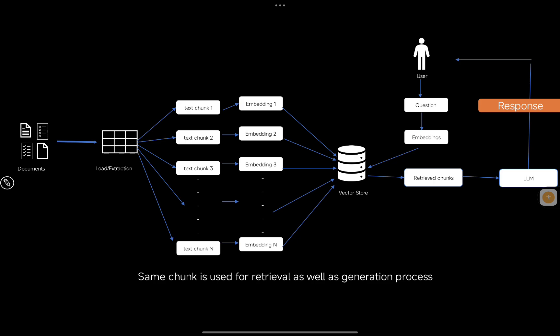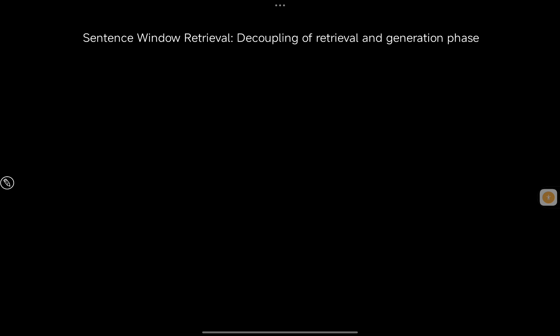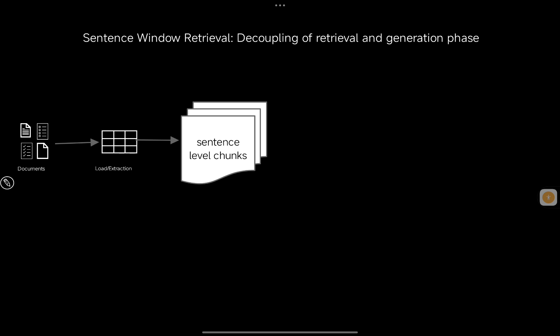In terms of the retrieval phase, the more specific the chunk is to the question, the better the retrieval is. The sentence window retrieval concept decouples the retrieval and generation phases. We take the documents, load and extract them, and create sentence-level chunks — instead of larger chunks using multiple sentences or a paragraph. The user's question is matched to each sentence, and relevant sentences are retrieved.